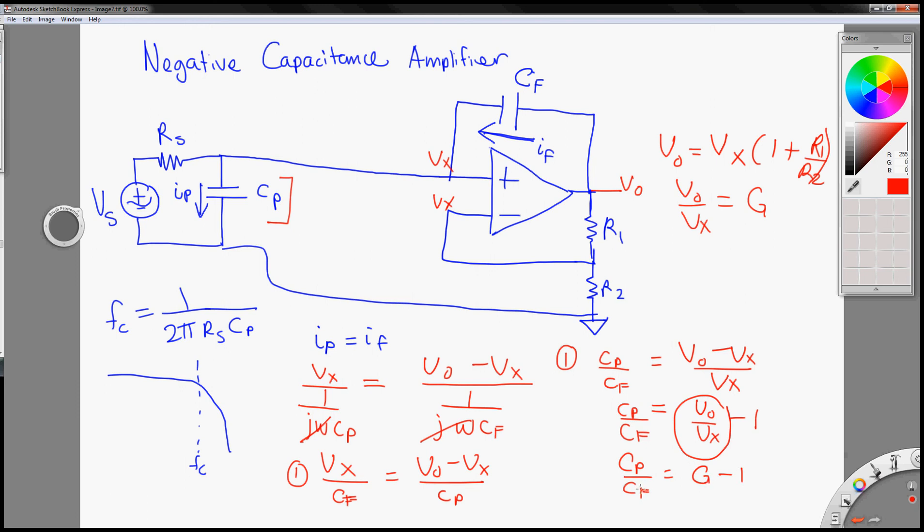So now we can find, given Cp, we can find the appropriate Cf, so that we can adjust the current, the compensation here, so that that will offset the Ip.